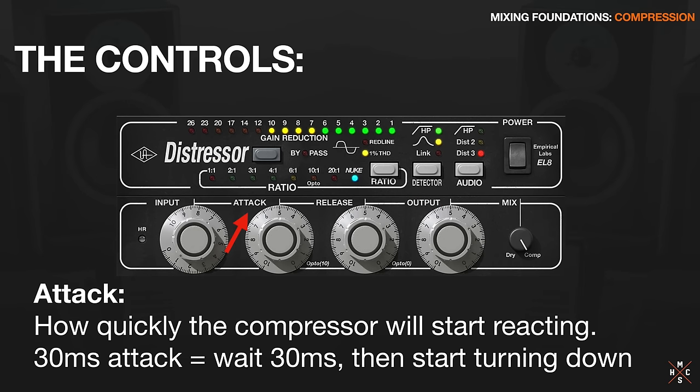The attack control determines how quickly the compressor will start reacting. For example, a 30 millisecond attack means that as soon as the signal crosses the threshold, it's gonna wait 30 milliseconds then start turning down the signal. Simplify this in your mind: fast attack, medium attack, slow attack. A fast attack grabs the signal very quickly, so it's going to reduce transients. A slower attack is gonna allow more of the transient through before it clamps down.